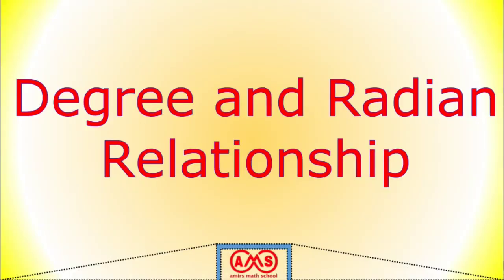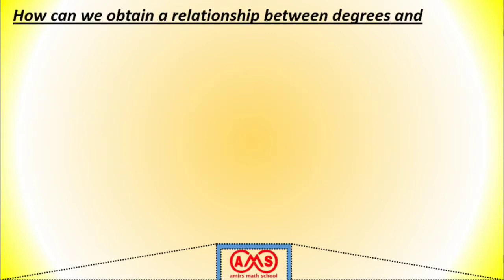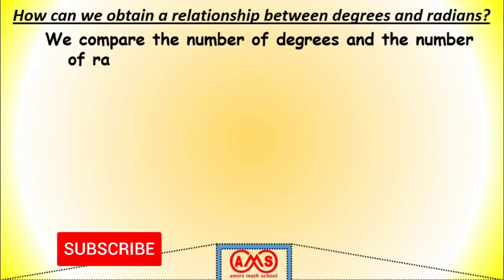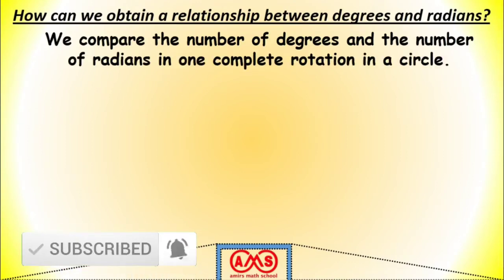Welcome to this video. In this video, we are going to relate the degree and the radian measurement of angle. Let's start the video. How can we obtain a relationship between degree and radian? The answer is, we can compare the number of degrees and the number of radians in one complete rotation in a circle.